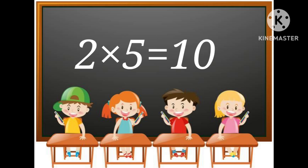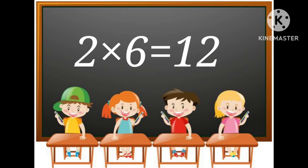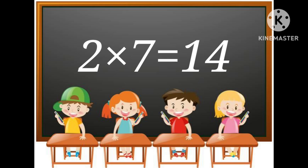2 multiplied by 5 is equal to 10. 2 multiplied by 6 is equal to 12. 2 multiplied by 7 is equal to 14.